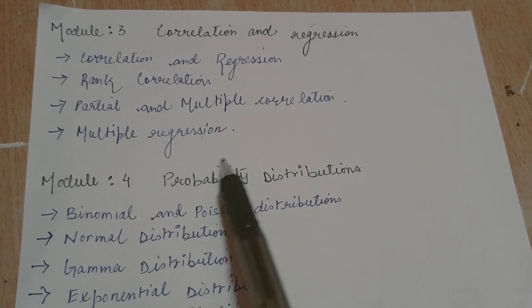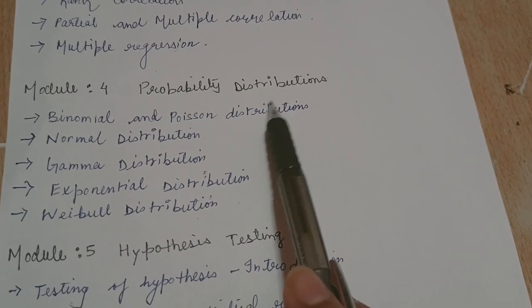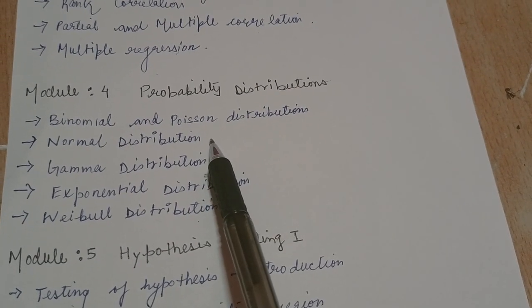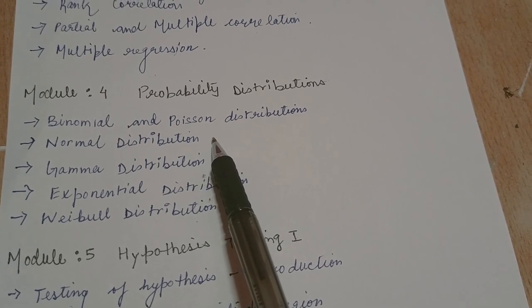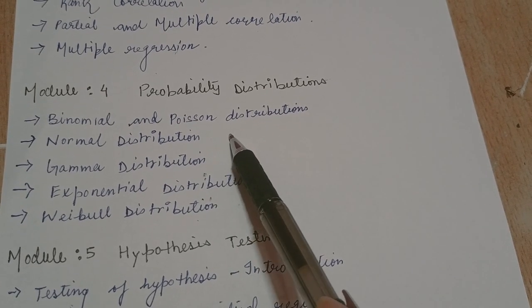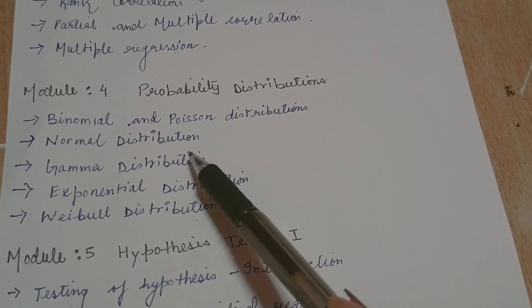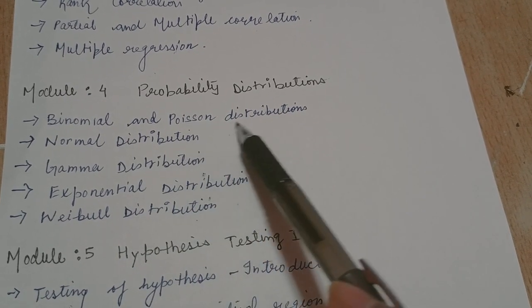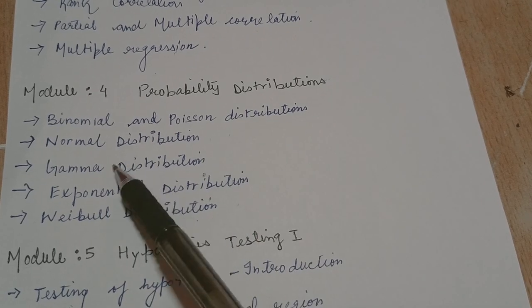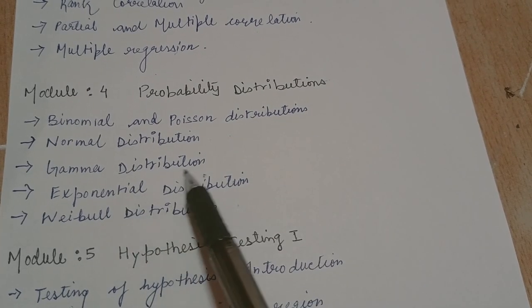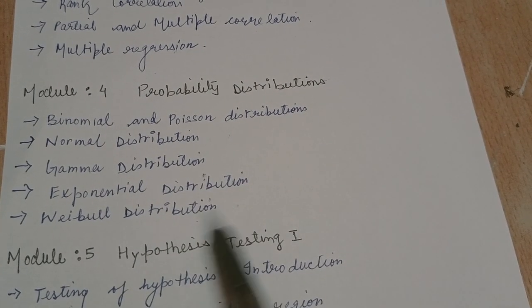Then comes module 4, that is probability distributions. This module is interesting. You need to understand the logic and some tricks and then you're good to go. Binomial and Poisson distribution is the first topic. Then normal distribution, then gamma distribution, then exponential distribution.